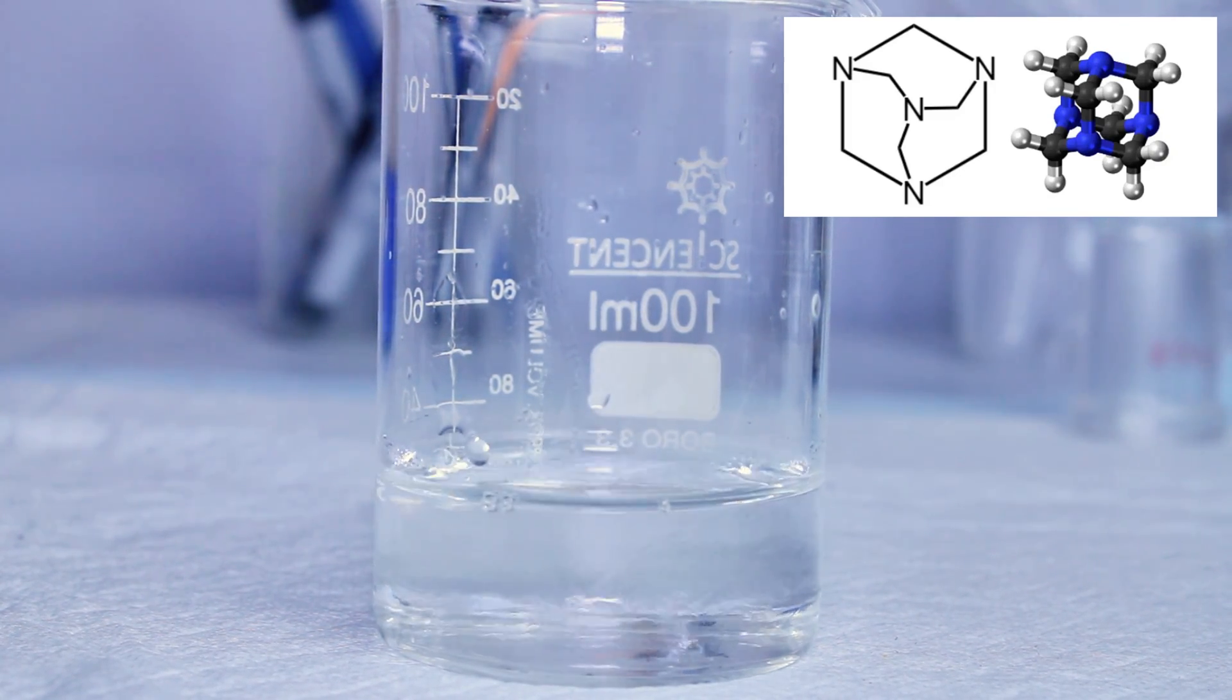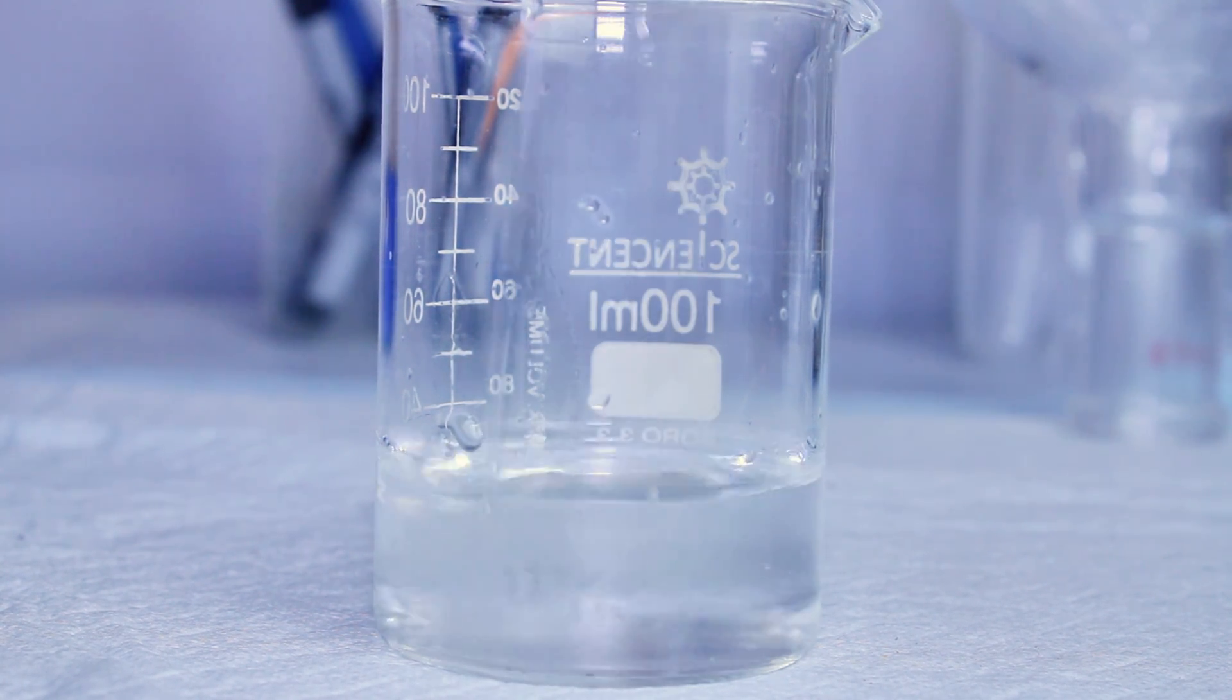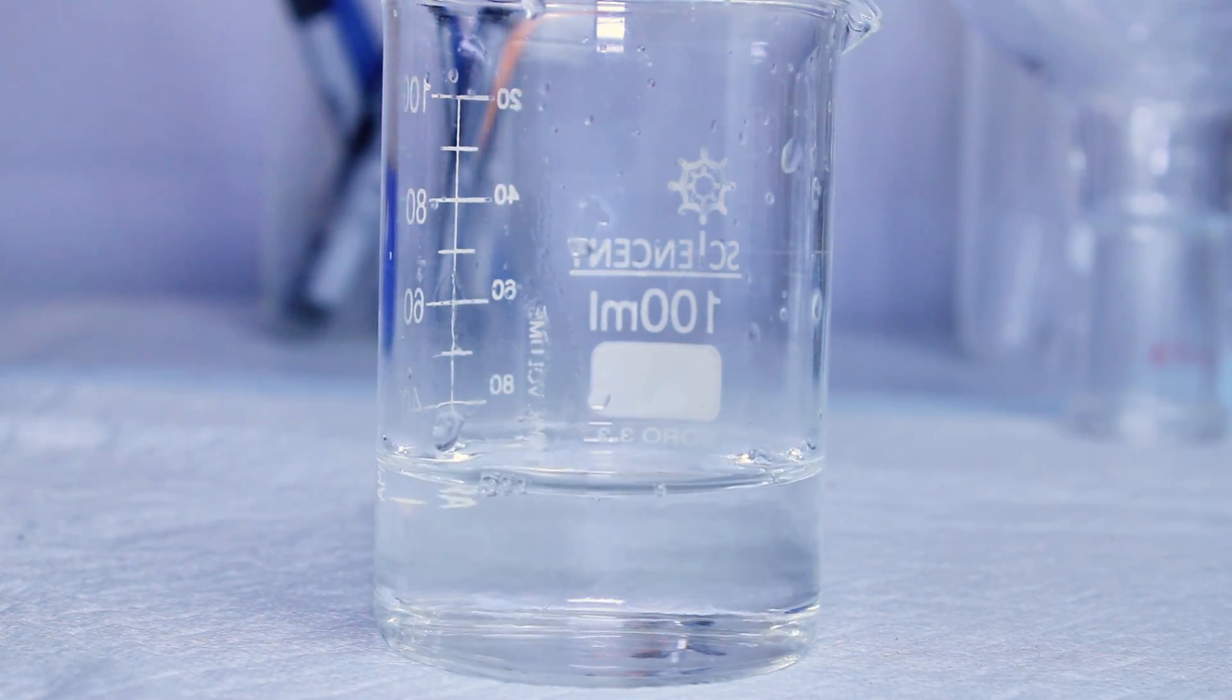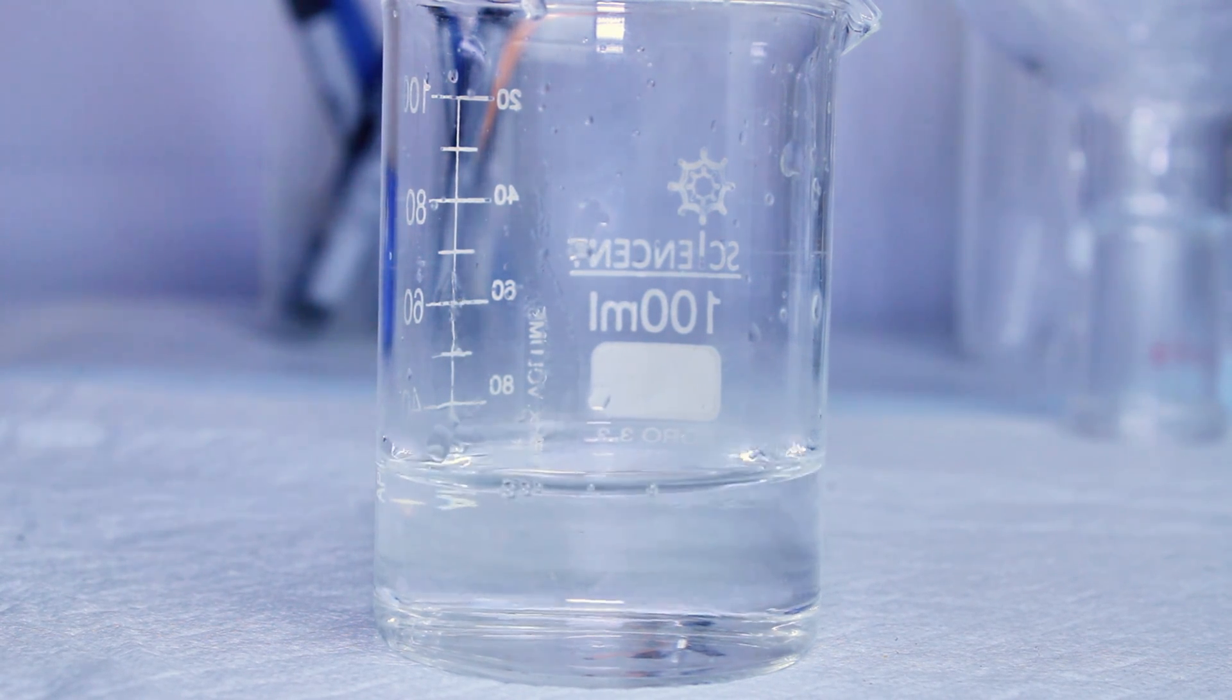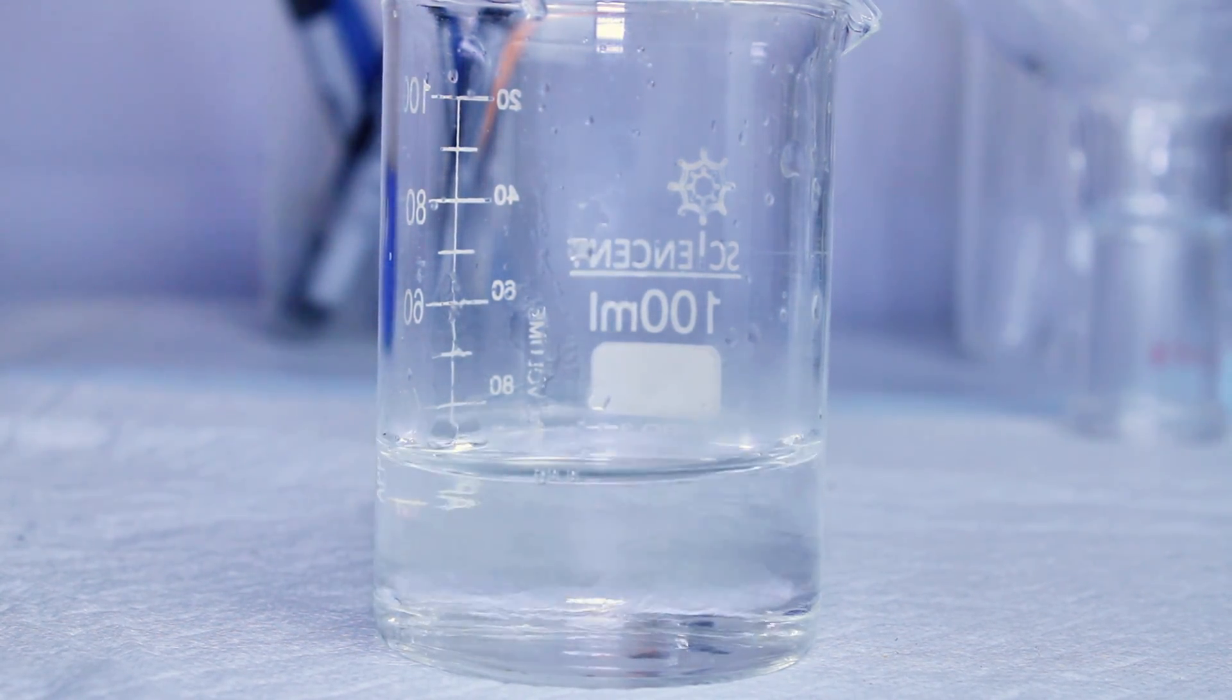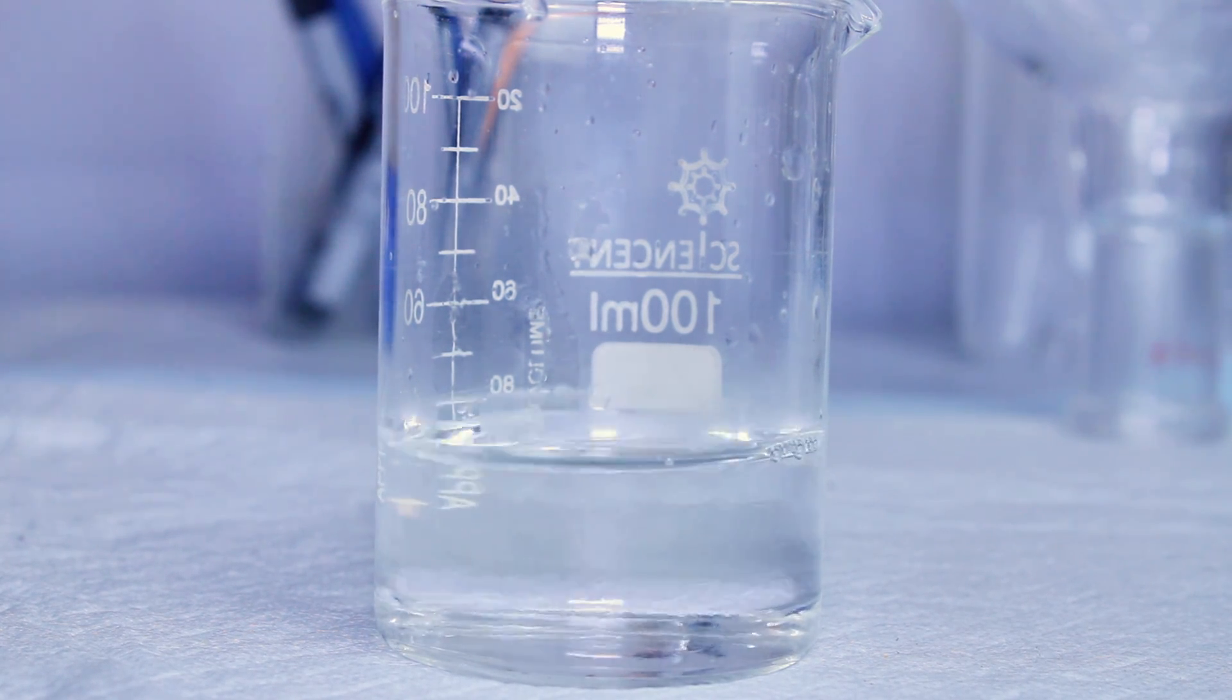Synthesizing hexamine yourself is actually pretty easy, and all you have to do is mix together ammonia and formaldehyde. In my case here, I used about 30ml of a 37% formaldehyde solution, and then added a large excess of ammonium hydroxide.